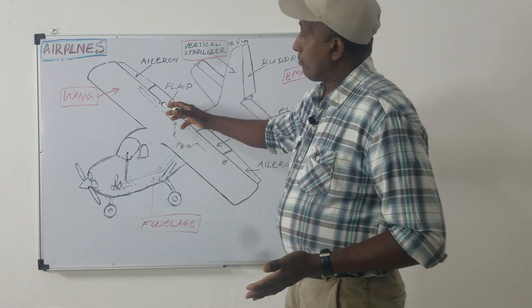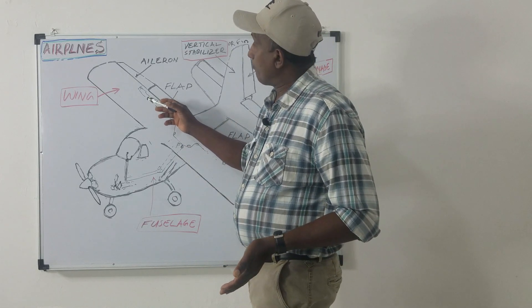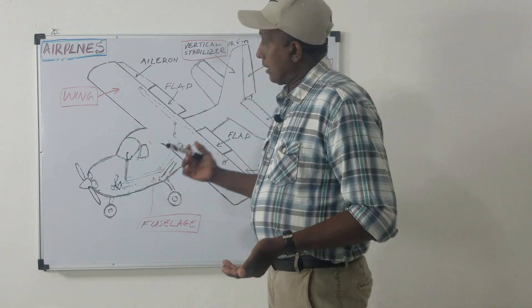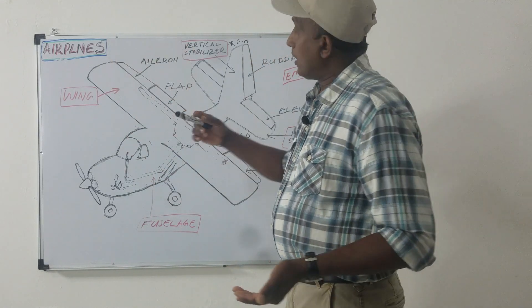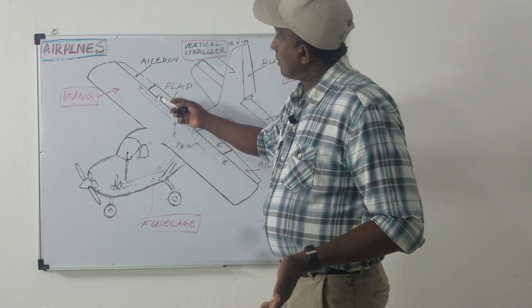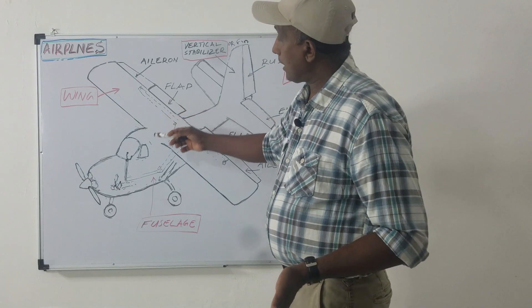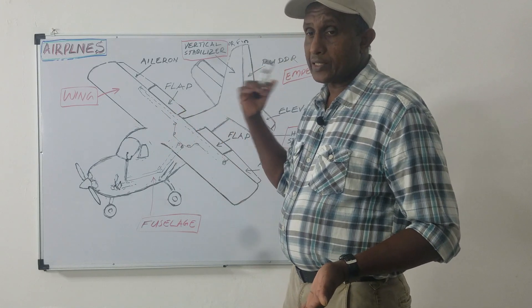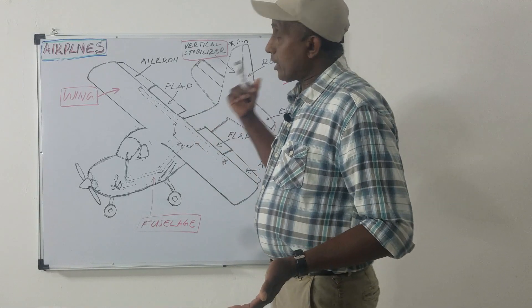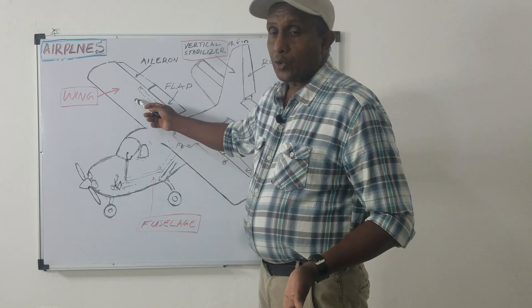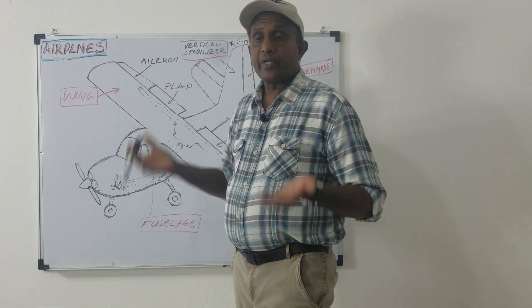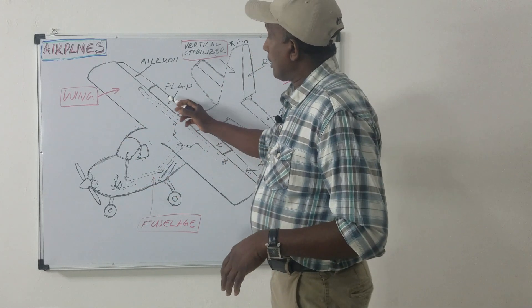When air flows around the wings of an airplane it generates a force called lift that helps the airplane fly. The flaps increase the area of the wing, generating more lift when the aircraft is landing and taking off.